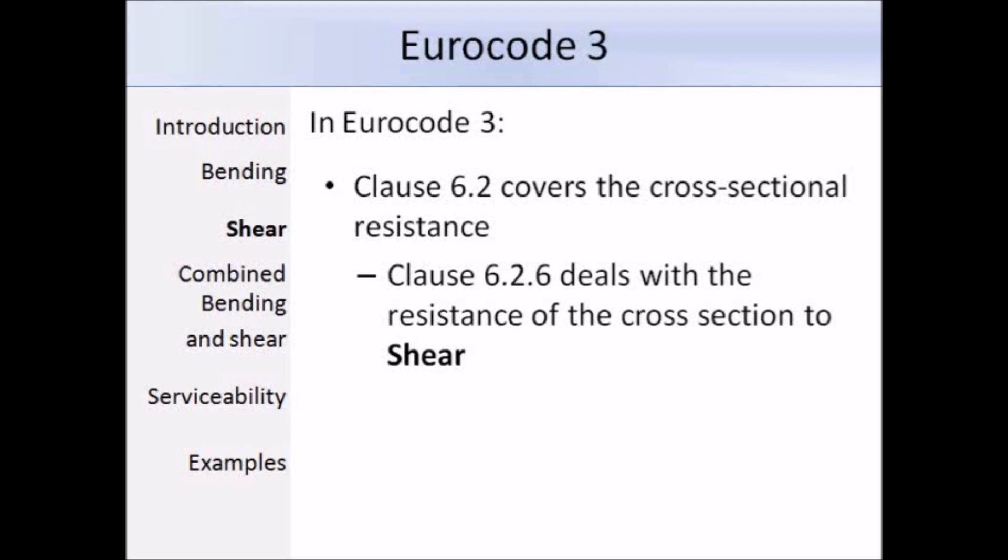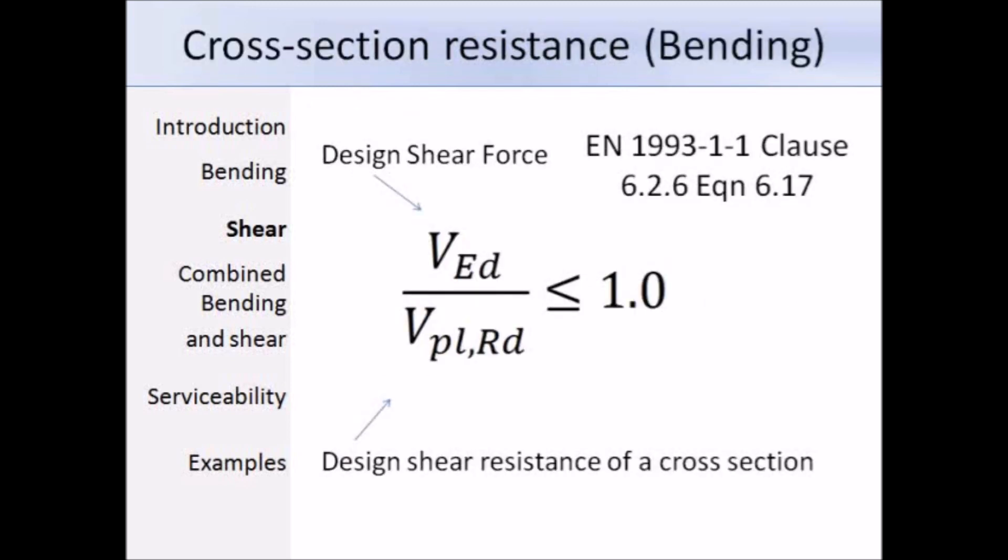Just like bending, we are referring to Clause 6.2 of EUR3, which deals with the cross-section resistance. In particular, we are dealing with Clause 6.2.6, which covers the resistance of cross-sections against shear. Although in most cases bending will govern the design, certain situations will arise in which the shear forces are the controlling factor. Therefore, we use this equation 6.17 to ensure the design shear force is less than the design shear resistance of the section.